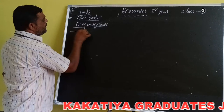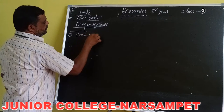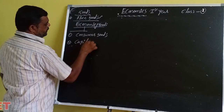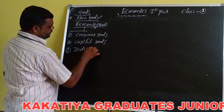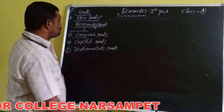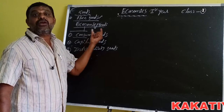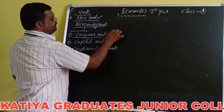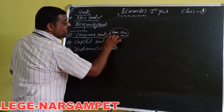Economic goods are divided into three types: number one, consumer goods; number two, capital goods; and number three, intermediary goods. Consumer goods means goods which can satisfy human wants directly. For example, book, pen, banana, apple, etc. These goods satisfy human wants directly.